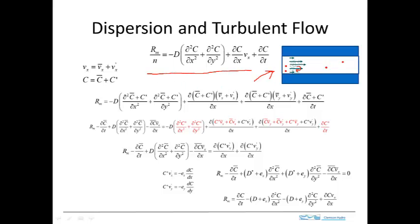To see how that works, let's start with this equation that we developed earlier. What I'm going to do is assume that the velocity equals a mean velocity plus a variation. This fluctuation or variation in the velocity is due to these vortices. Similarly, the concentration equals a mean value plus a perturbation. So all I've done is substitute these versions for velocity and concentration as mean values plus perturbations.